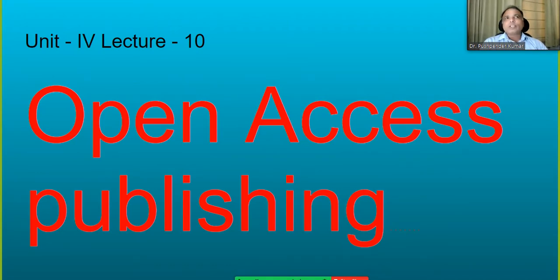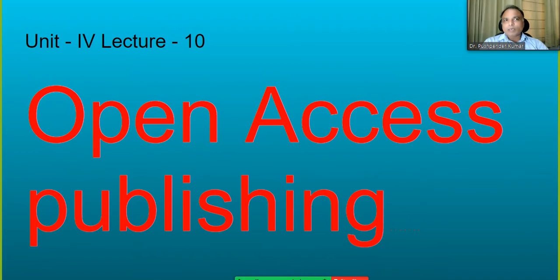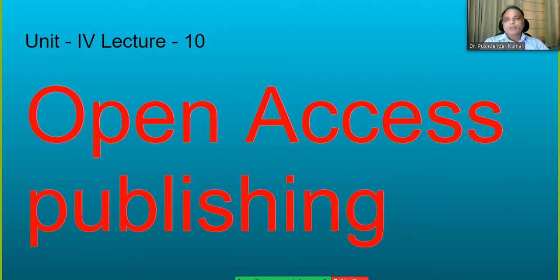Generally what we used to do, we used to send paper for publication, and that journal used to publish in hard copy. But now things have changed. Government came out with some kind of policy or schemes that you need to publish your article in online format, in online mode, so that a lot of people can read it and take benefit of your research. And when you publish online, one more motto is that it should not have any charges. So let us see what is this open access publishing.